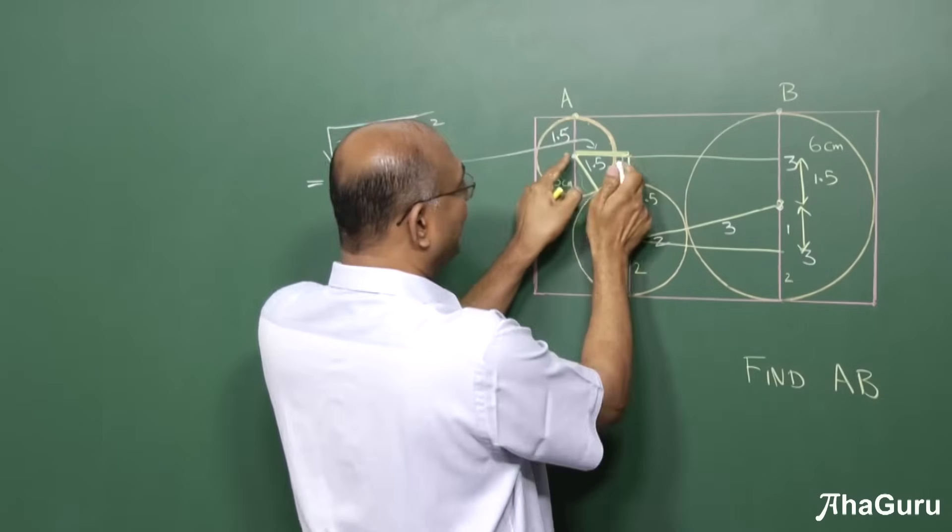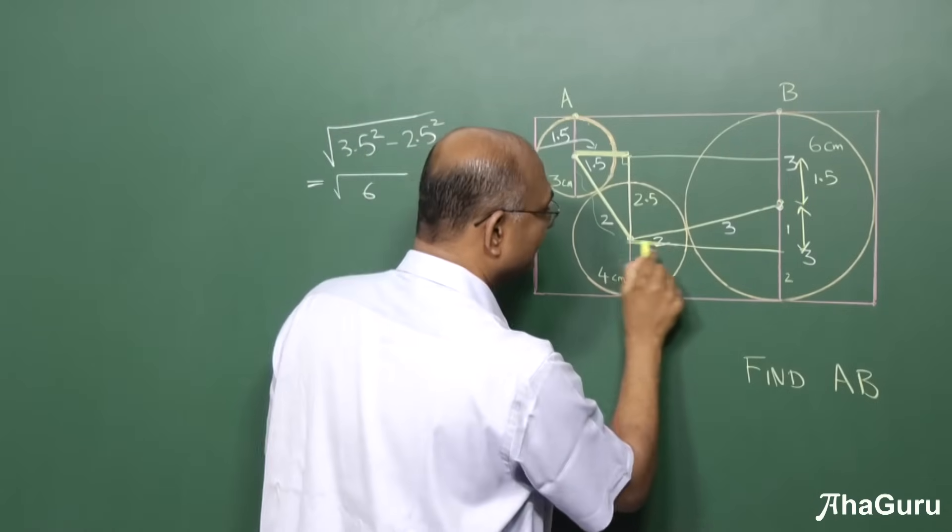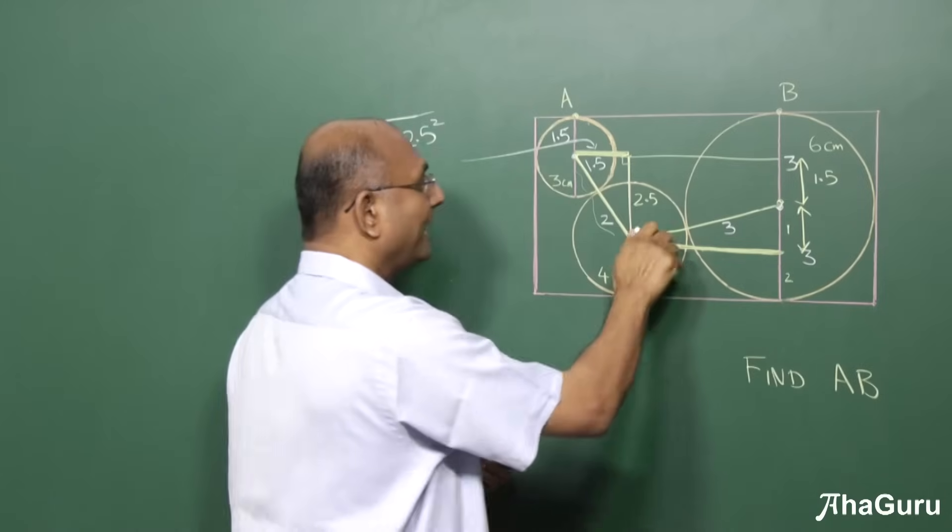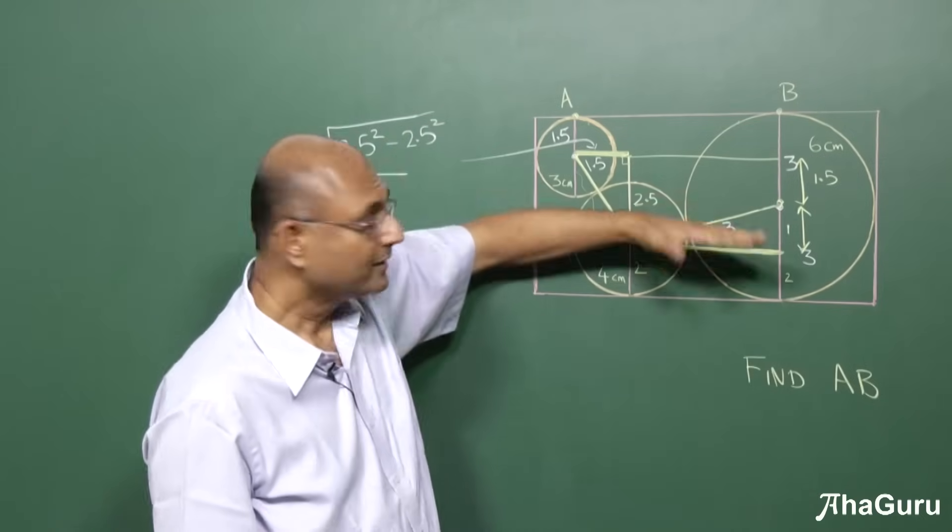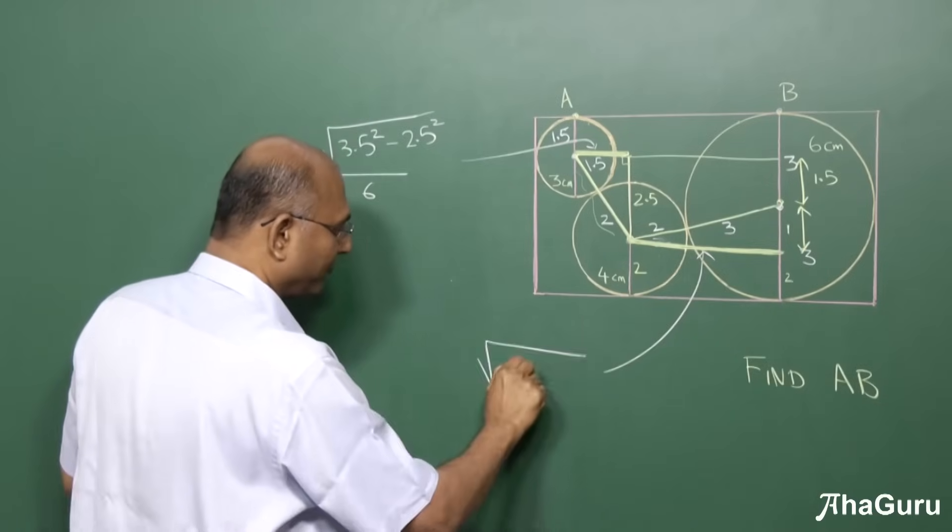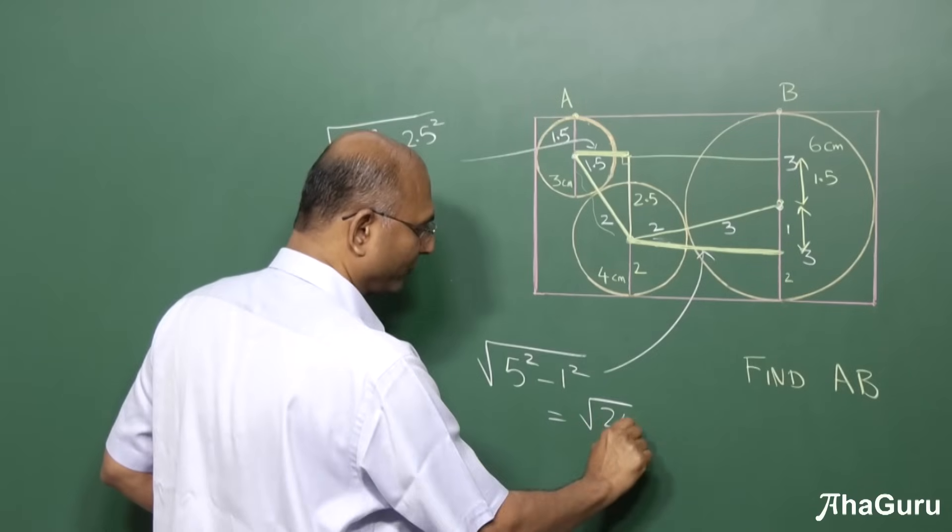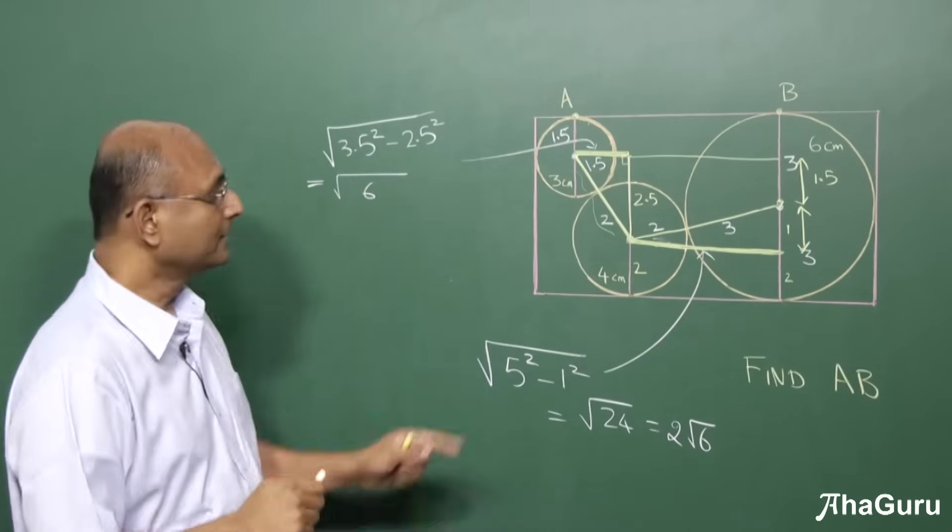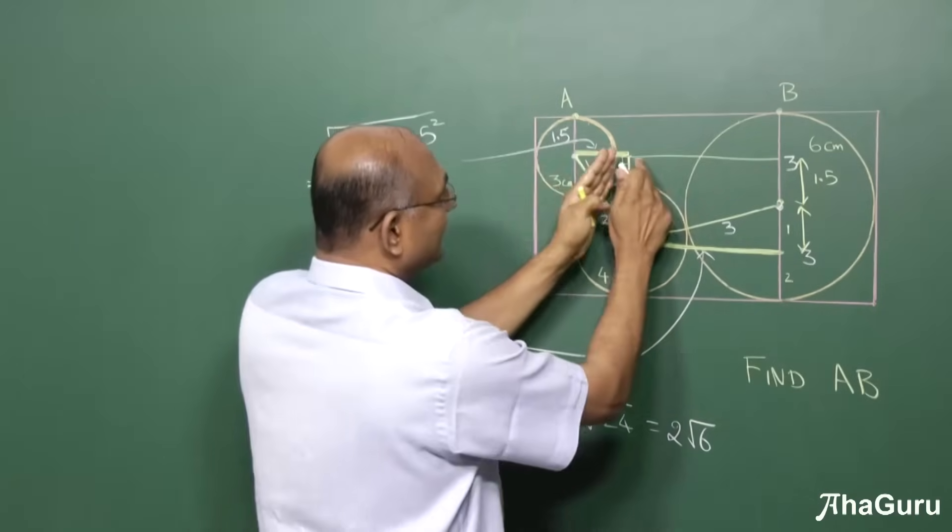So I have got for AB one part done. Now the second part I need to calculate. But instead of calculating this length, what I'm going to do is calculate this length. Why? Because I already know that this is 2, that is 3, so I know that is 5, and I know this is 1. So if this is 5 and that is 1, what is this length going to be? Root of 5 squared minus 1 squared, so that is 25 minus 1, 24. So root of 24. 24 is 4 into 6, so 4 can come out, it will become 2 root 6. So this length is 2 root 6.